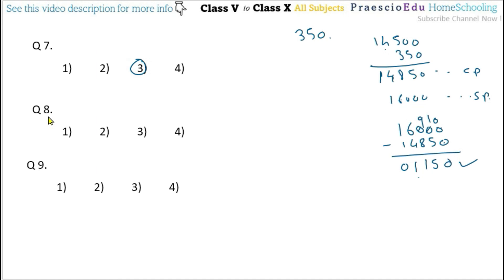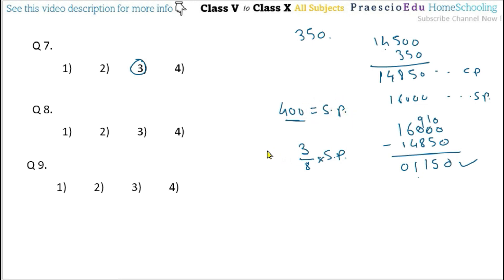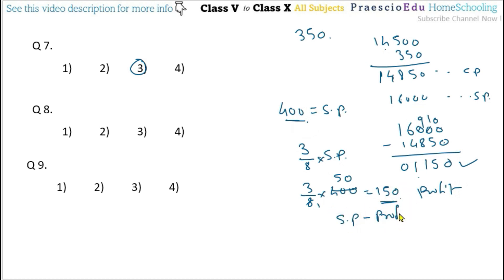Question number 8: when a shirt is sold for rupees 400 the profit earned is 3/8 of the selling price. Profit equals 3/8 multiplied by 400 equals rupees 150. Cost price equals SP minus profit, so CP equals 400 minus 150 equals rupees 250. The answer rupees 250 is given in option number 3.